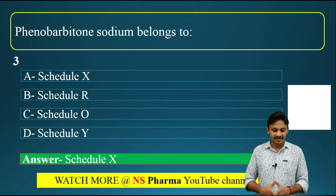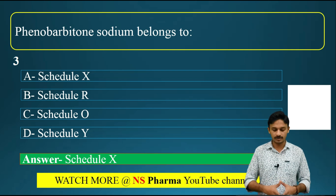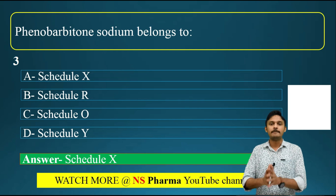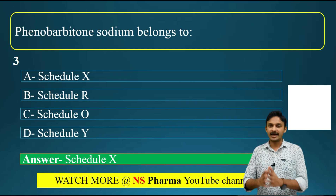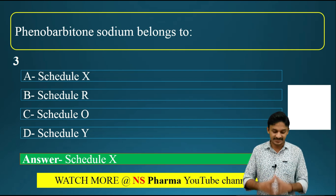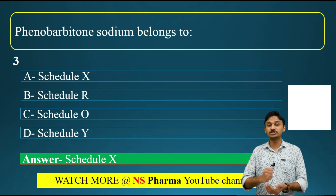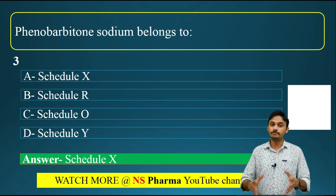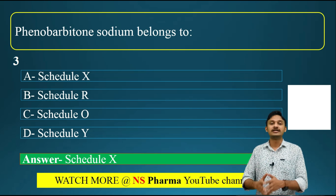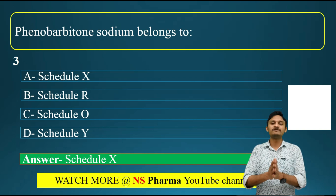Regarding Schedule X: the symbol 'Rx' should be printed in red color on the left-hand corner of the label. Once a Schedule X drug is dispensed, the pharmacist should stamp the prescription and retain it for two years. The pharmacist should also maintain a record of the sale and purchase of Schedule X drugs and keep this detail for two years from the transaction date.